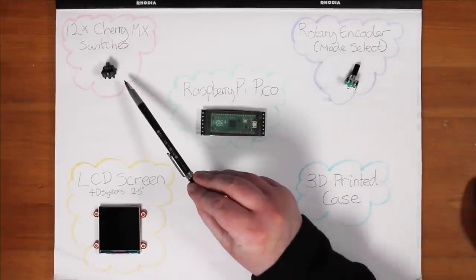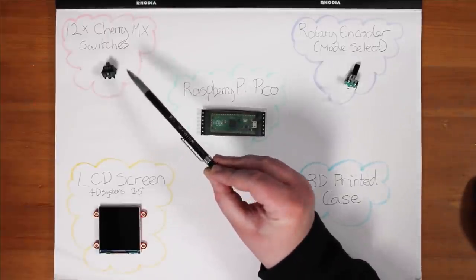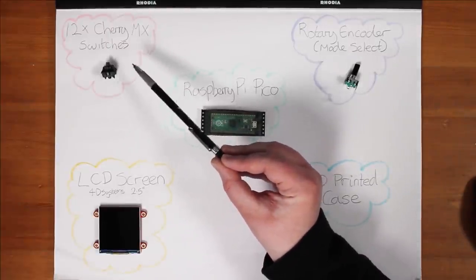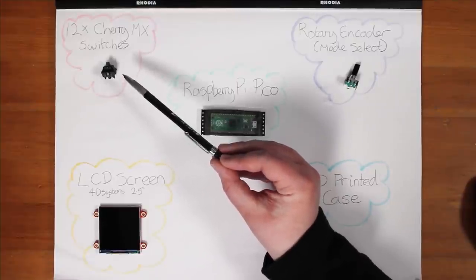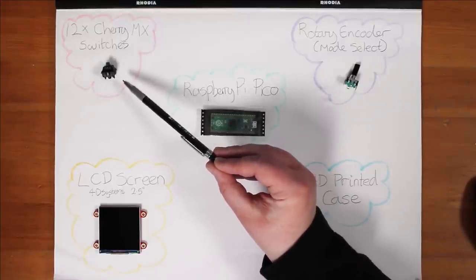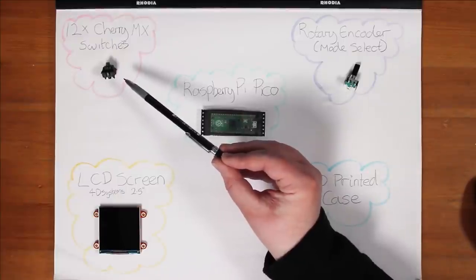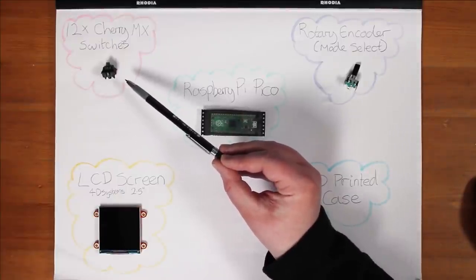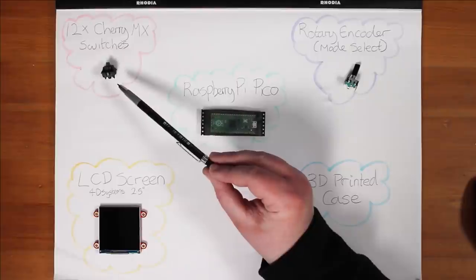So we're going to use the Pico and then I'm going to have 12 buttons that I can press. So I've picked the Cherry MX switches. This is because it's a standard keyboard switch, so it will look and feel like a normal keyboard.